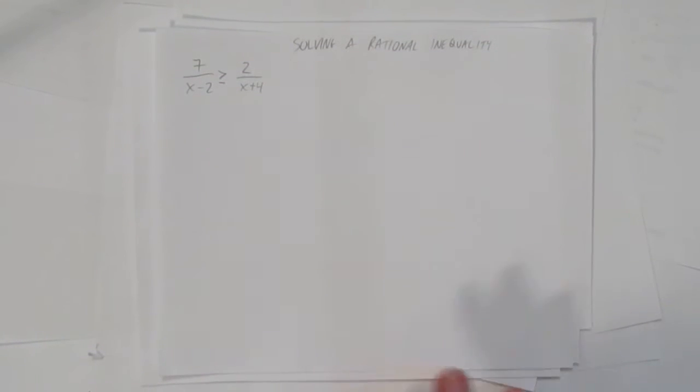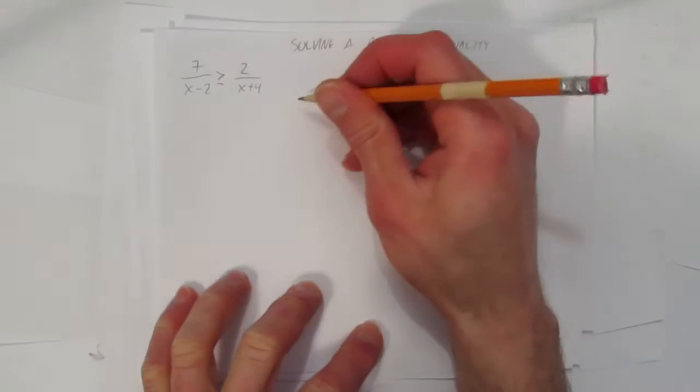In this video, we'll look at how to solve a rational inequality. The rational inequality is 7 over x minus 2 is greater than 2 over x plus 4.